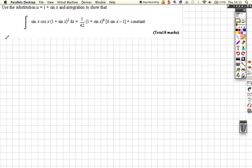Let's write out the integration we need. So sine of x, cos of x, brackets 1 plus sine of x all to the power 5 with respect to x. And it's asking us to use this in the substitution u is equal to 1 plus sine of x.